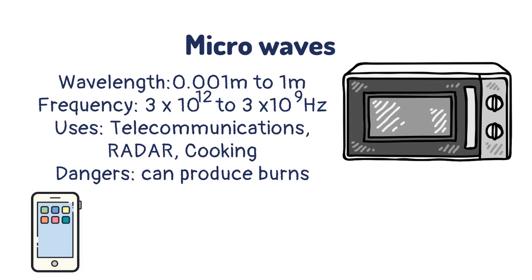Microwaves have a wavelength of between 0.001 meters to 1 meter and frequencies between 3 x 10¹² and 3 x 10⁹. They are used in telecommunications, radar and cooking. Microwaves should be treated with caution as they can cause burns.